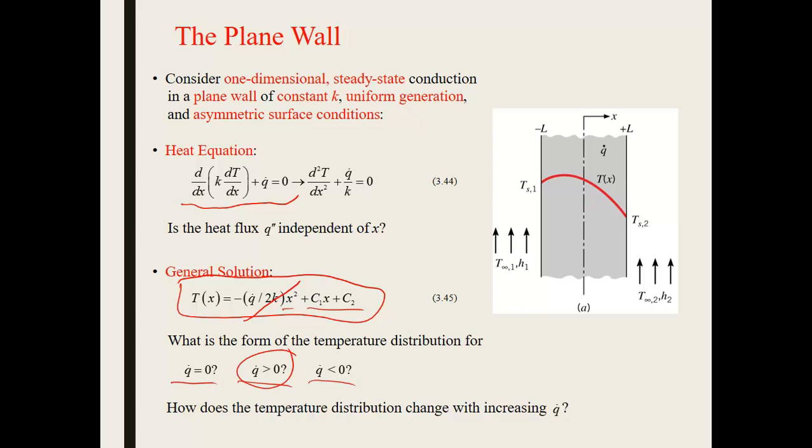If q is greater than zero, you have generation, you'd expect to have higher temperatures within the material itself than you might see at the boundaries. And if q were negative, then you actually have heat being consumed within the plane wall.